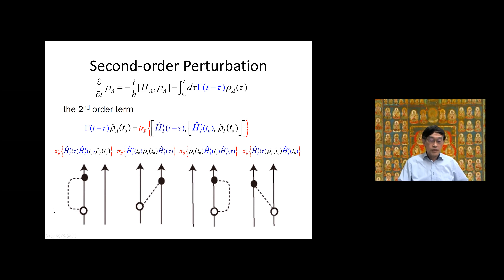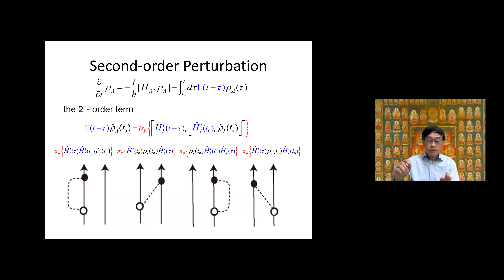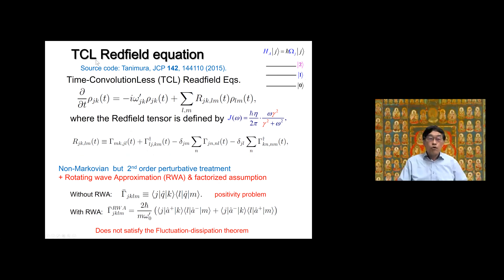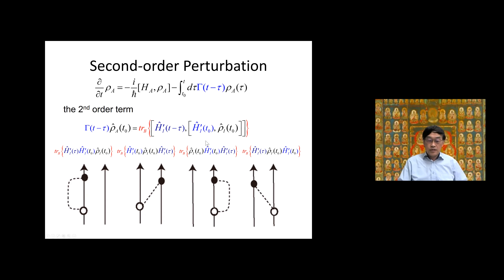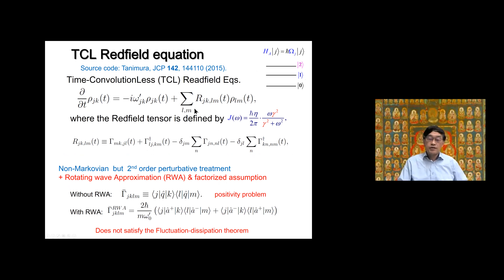A very special term for this reduced description is one where the left-hand side wave function emits a phonon and the right-hand side wave function absorbs it — communicating the bra and ket. Because of this term, the equation of motion is not Hermitian conjugate. This means we cannot make a wave function description for this — we need the density matrix. This is a second-order perturbation theory master equation, or the time convolution Redfield equation.